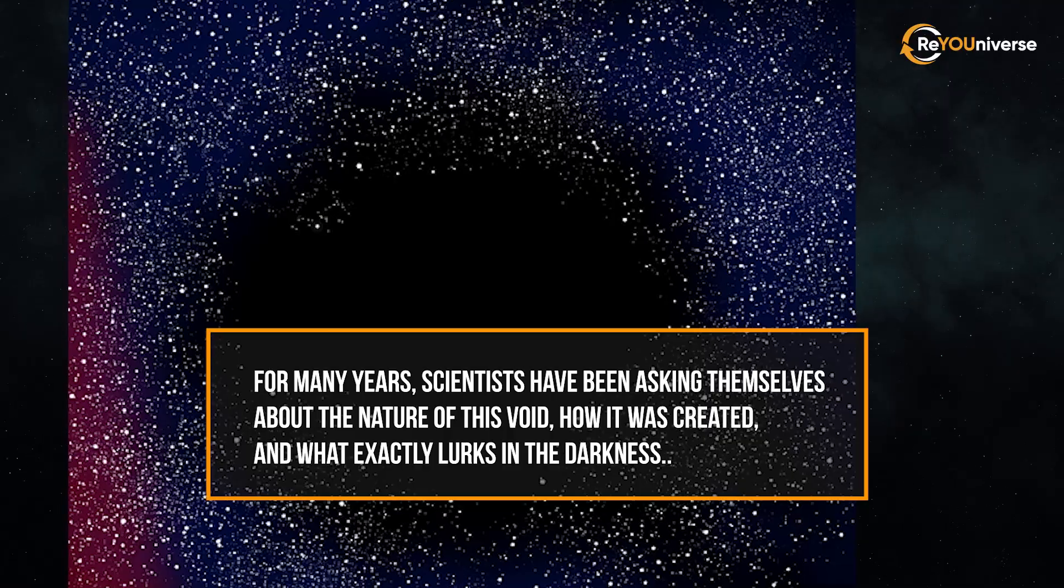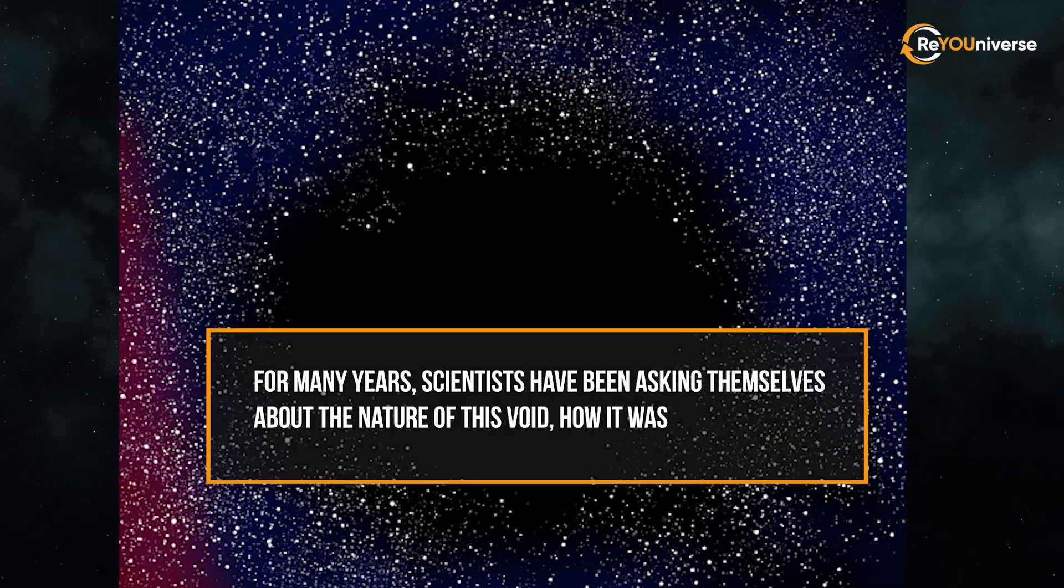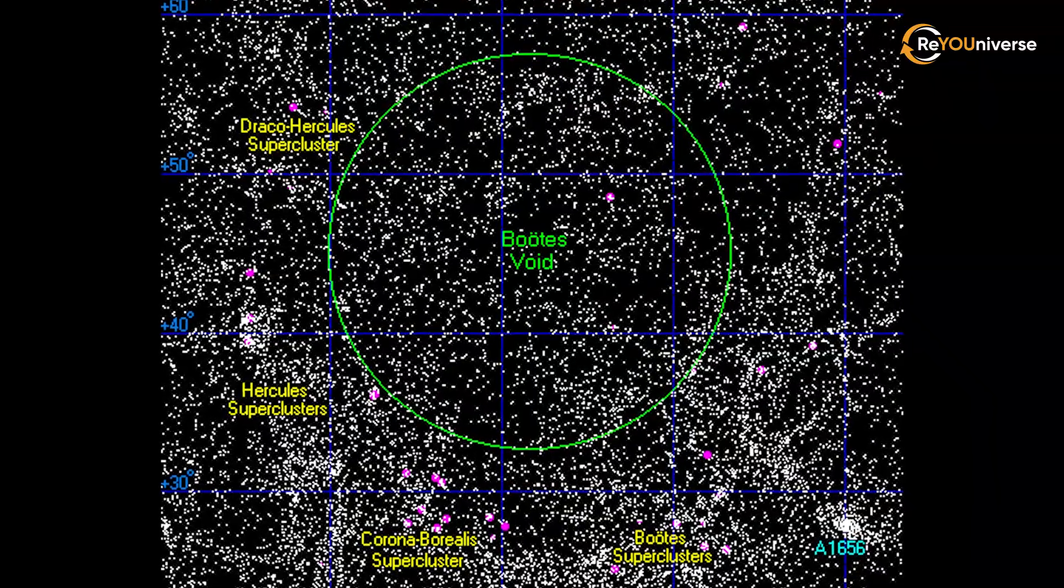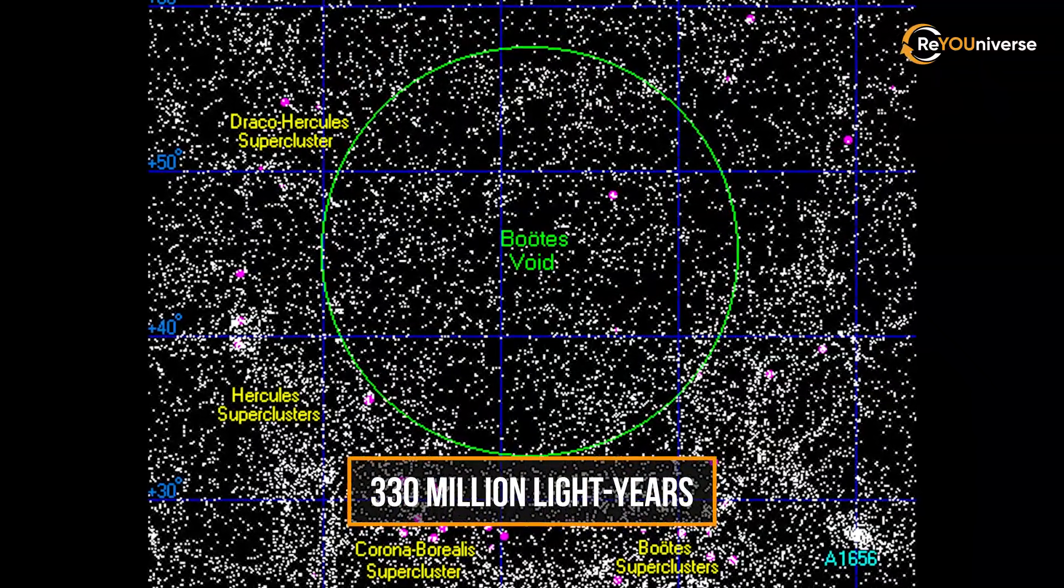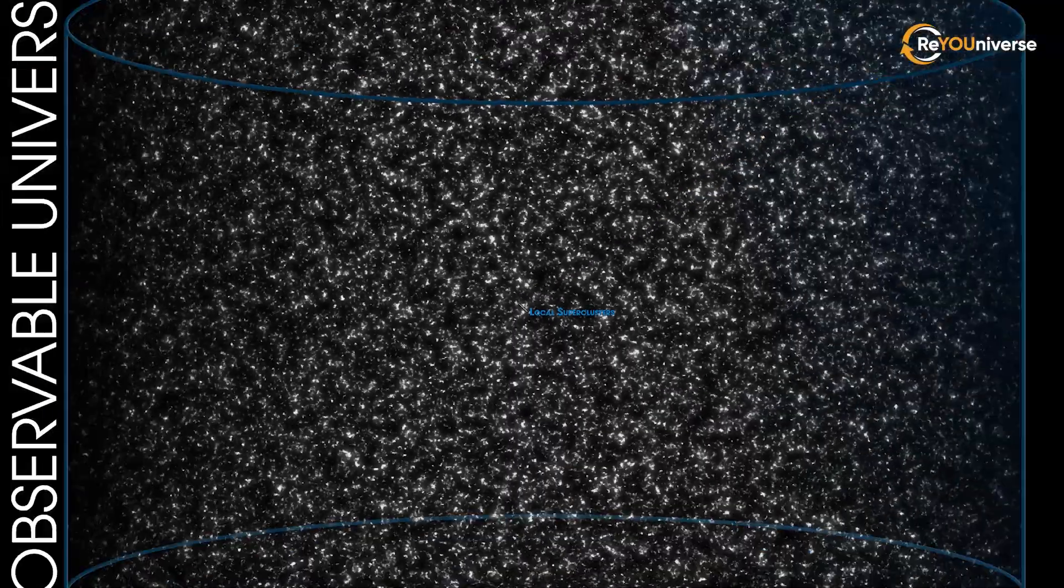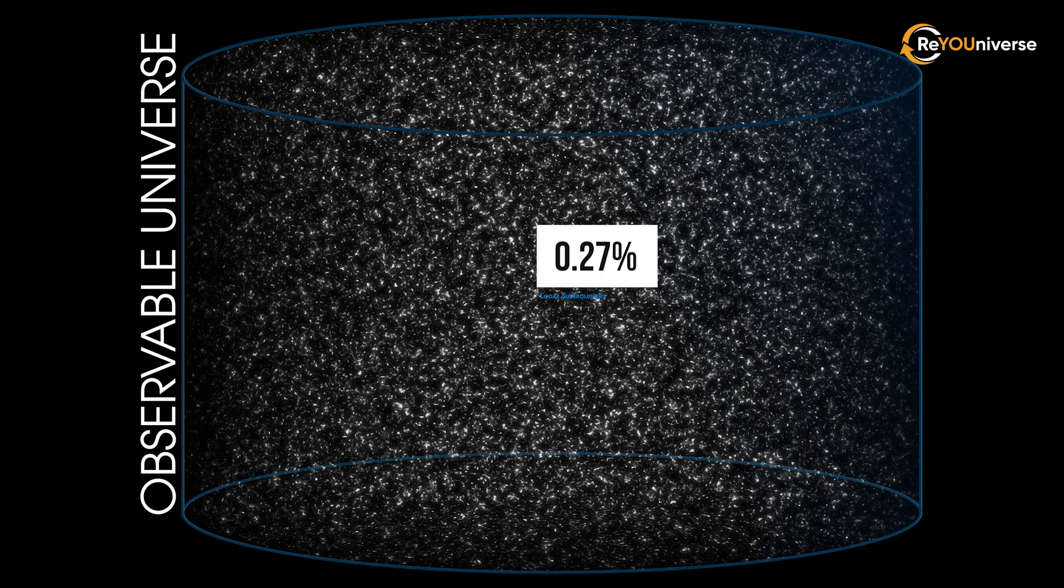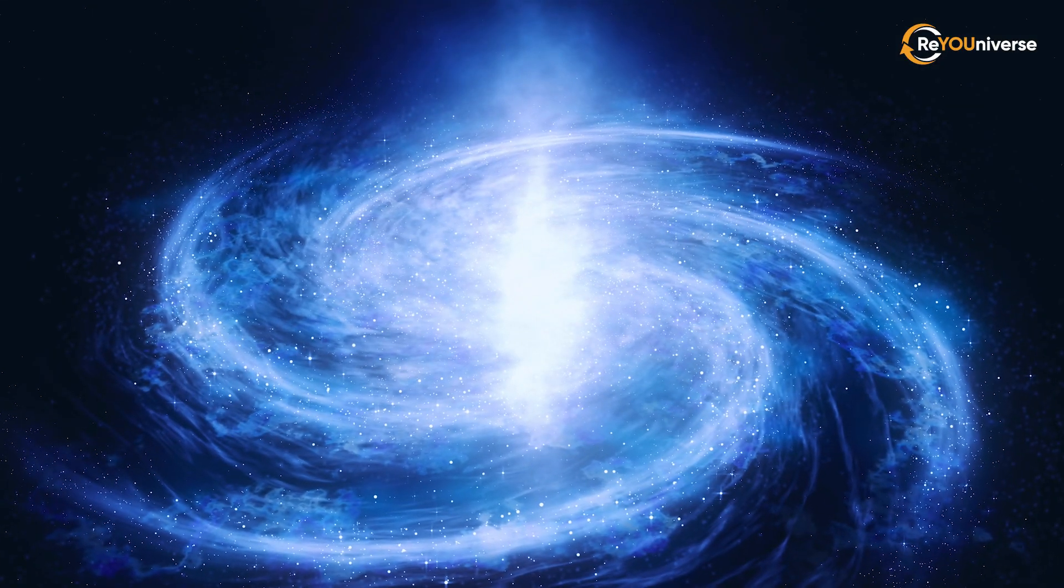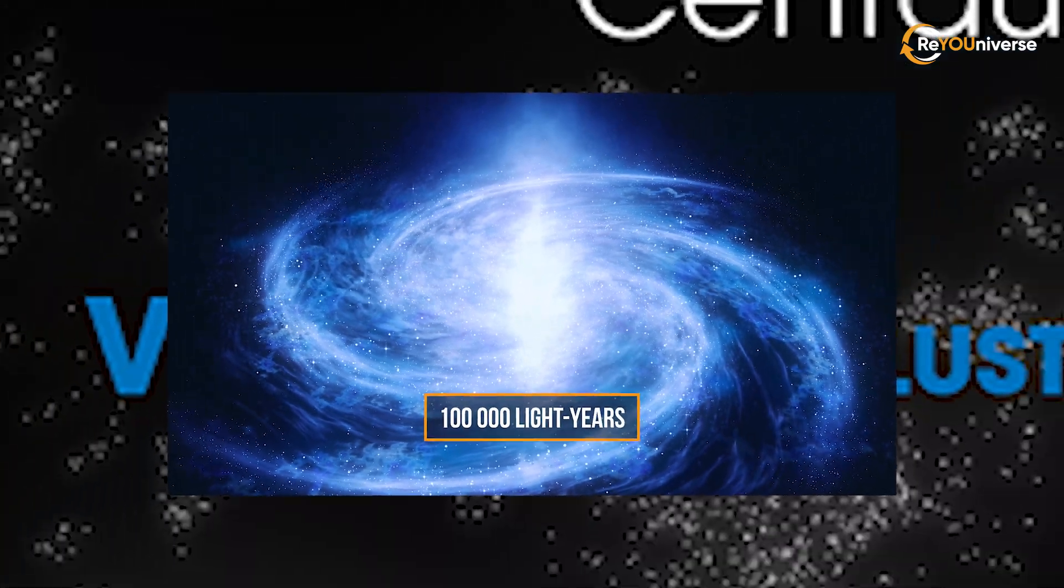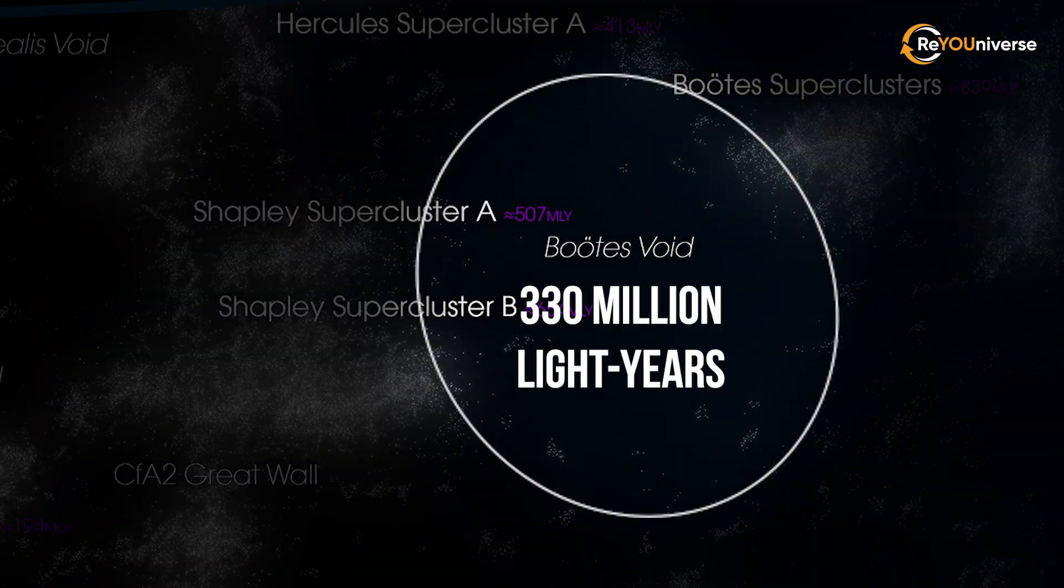How it was created, and what exactly lurks in the darkness. The diameter of the Boötes Void is estimated to be 330 million light-years, which is astonishing, considering the fact that it comprises 0.27% of the diameter of the known universe. The size of our Milky Way galaxy is about 100,000 light-years, which is minuscule compared to this void.